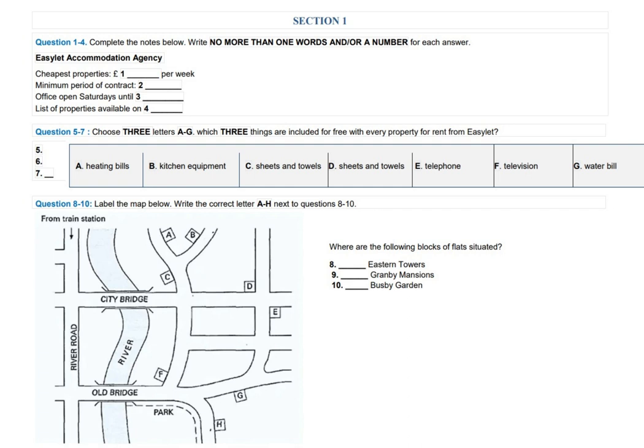What about Granby Mansions? The best way to get there from the station is probably to go down River Road and then cross over Old Bridge. The road bends to the right round the park, and if you follow along, you'll find it there on the left side. That's a great location with lovely views of the park. Very nice. And you said there was one more? Busby Garden, yes. OK. From the station, cross over City Bridge. Keep going through the first crossroads until you come to the second crossroads. Busby Garden will be facing you over to the right side. It's very convenient for the shops. Fine. Thank you. Well, I'll see you on Saturday.